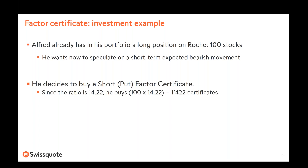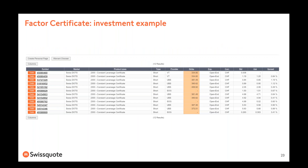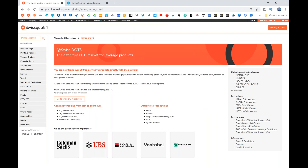For the short factor certificate example: investor Alfred already has a long position in 100 Roche shares and wants to speculate on a short-term expected bearish movement. He decides to open a position buying a short — also called put — factor certificate. Since the ratio at the moment is 14.22, he buys 1,422 certificates. The scenarios work the same way, just multiplied by the leverage.